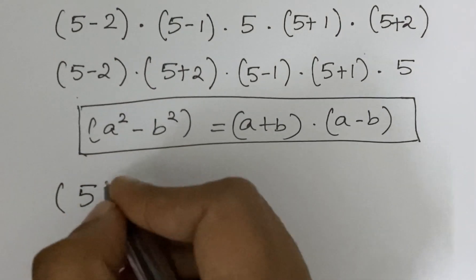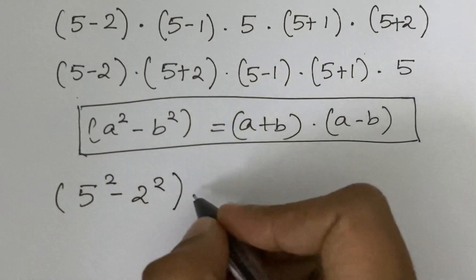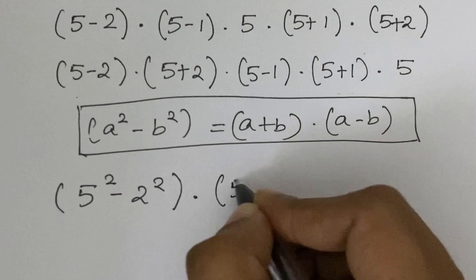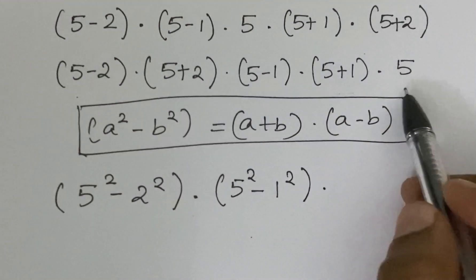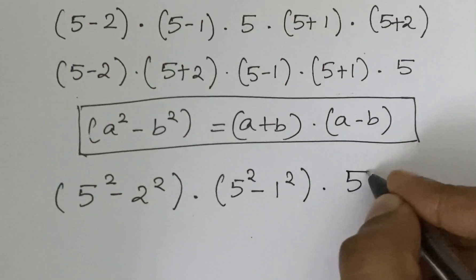If you apply this formula in the above expression, we get 5 square minus 2 square times 5 square minus 1 square times 5.